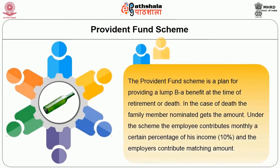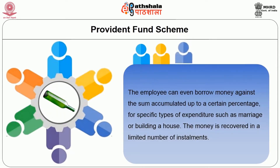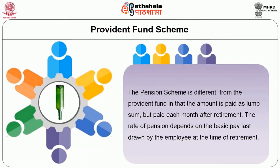First, we will discuss the provident fund. The provident fund scheme is the plan for providing a lump sum benefit at the time of retirement or death. In case of death, the nominated family members get the amount. Under this scheme, the employee contributes monthly a certain percentage of his income, usually 10%, and the employer contributes a matching amount. The employee can even borrow money against the accumulated sum for specific expenditures such as marriage or building a house. The money is recovered in a limited number of installments. The pension scheme differs from the provident fund in that the amount is not paid as a lump sum but paid each month after retirement. The rate of pension depends upon the basic pay last drawn by the employee at the time of retirement.